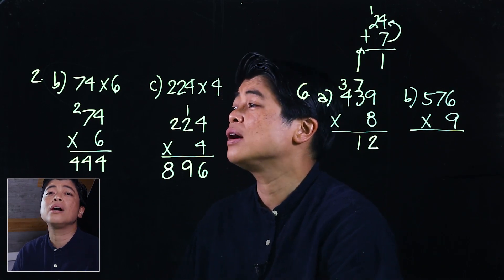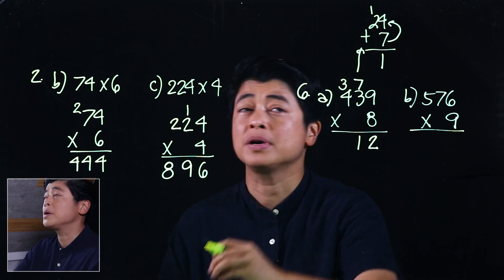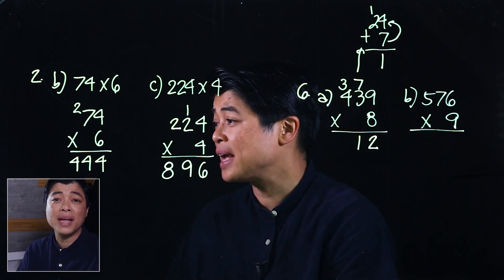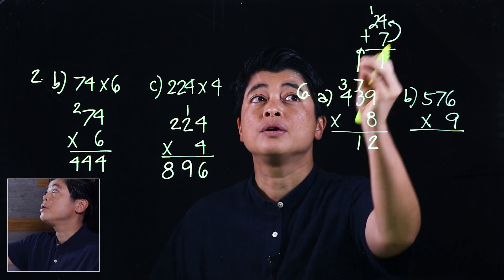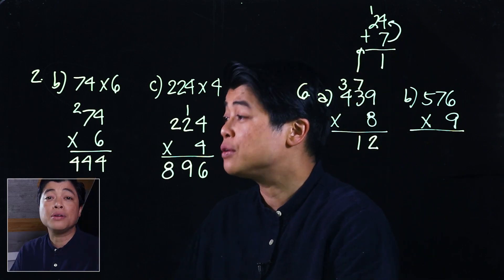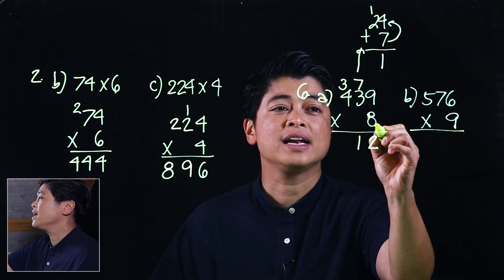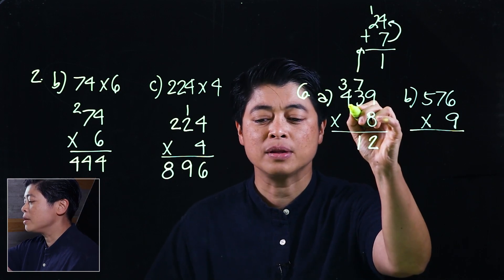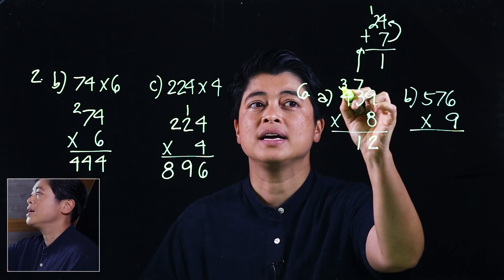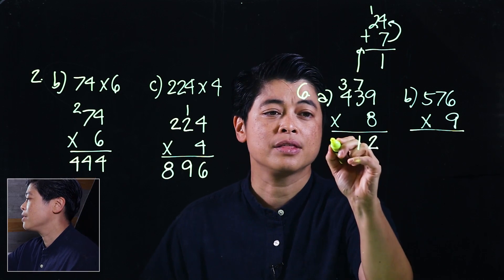If it's too hard for the kids, we need to allow them to either put it on the side, put it above, wherever they have space. They need to be able to write down what needs to be regrouped. Finally, if we take 8 times 4 that would be 32, plus 3 that would be 35.